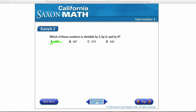It's not A, not B. We know it's C, but let's check D. 645. 6 plus 4 plus 5 equals 15. So, it is divisible by 3. It's not divisible by 9, though, because 15 is not divisible by 9. And it's not divisible by 6 because it ends in an odd number, so it's not even. So, the answer to example 2 is C.